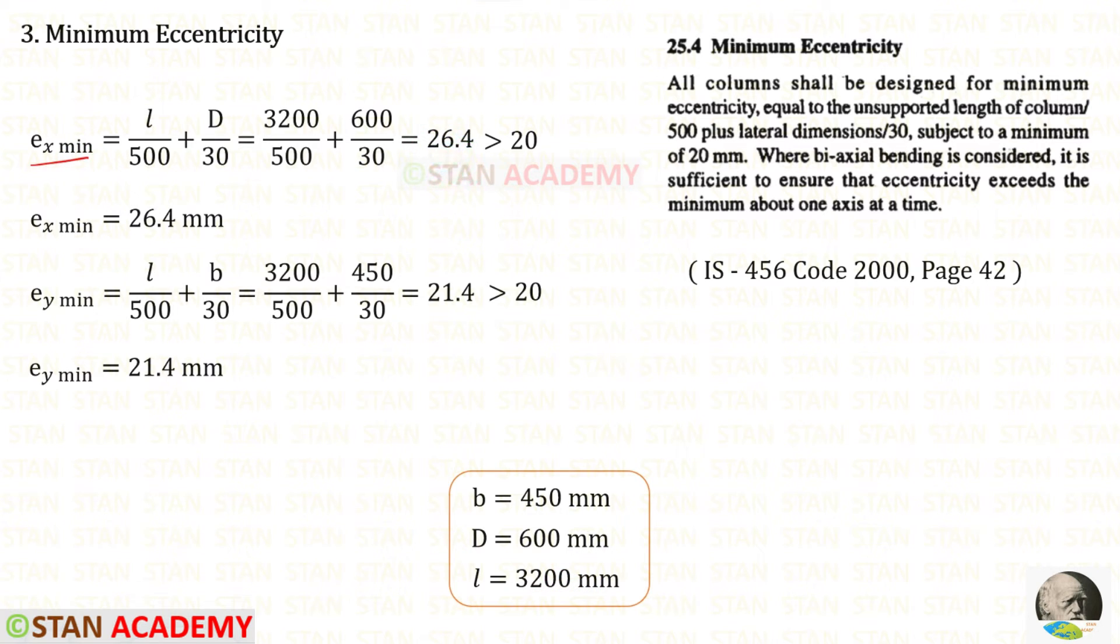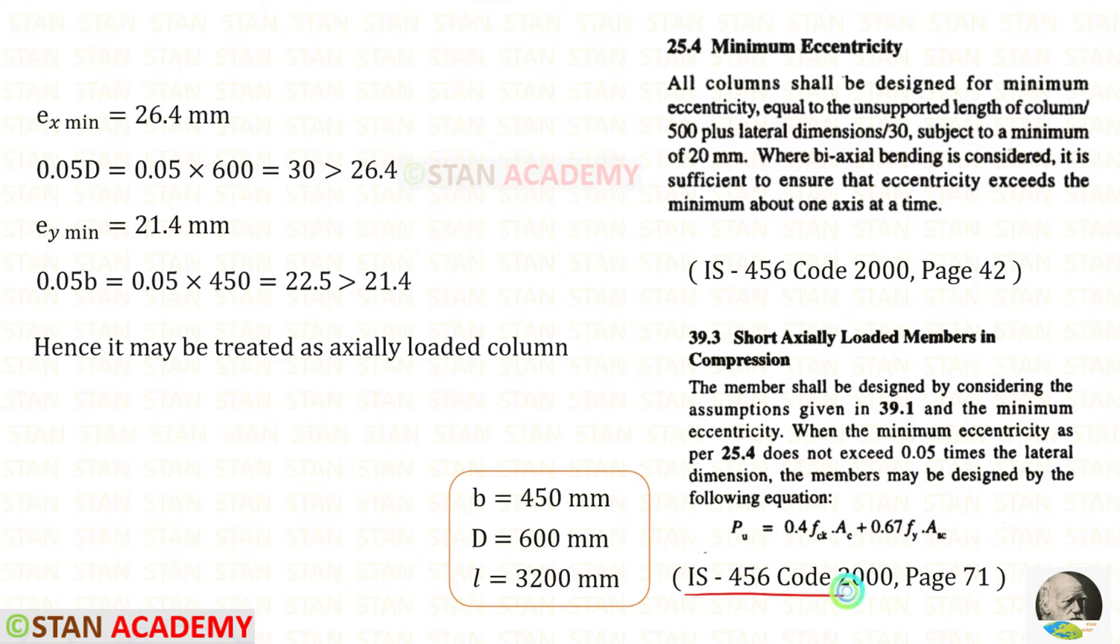The unsupported length of the column is 3200 millimeter. For E.x minimum we will get 26.4. It is more than 20. In these two values we have to select the maximum one. That is 26.4. Suppose this value is less than 20, let us say it is 18, then for E.x minimum we have to select 20. For E.y minimum we will get 21.4. It is also more than 20. So we have to select that.